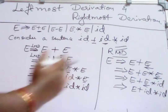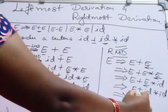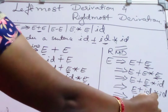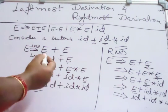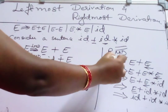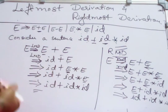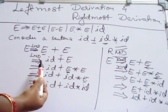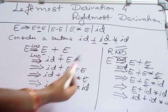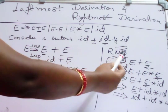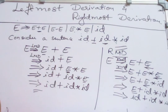From the right-hand side, substitution is being done. Again, this is the last rightmost symbol, giving ID plus ID star ID. We are able to derive the string by applying both rightmost and leftmost derivation. In leftmost derivation, the substitution of a non-terminal is done from the left-hand side, and in rightmost derivation, the substitution is done from the right-hand side at every step.